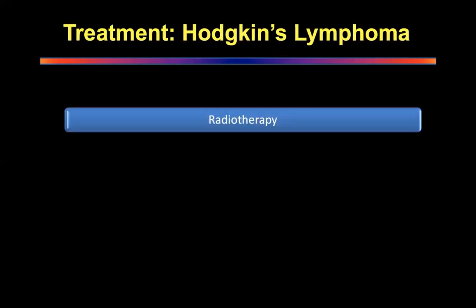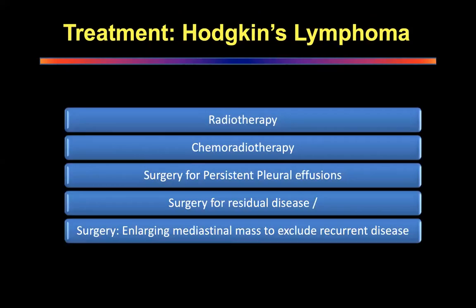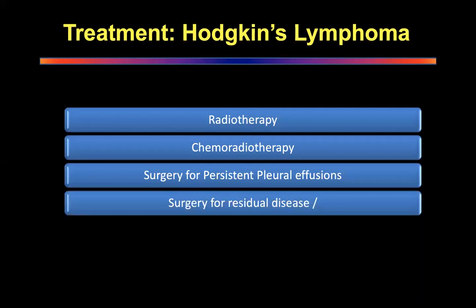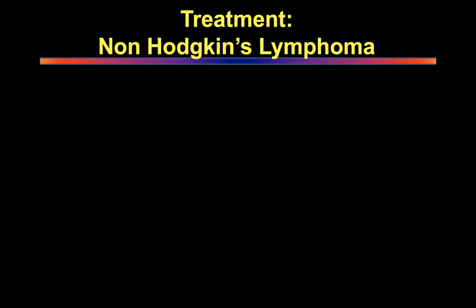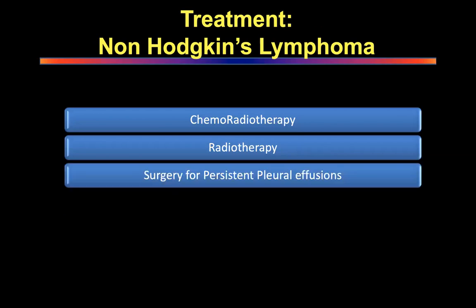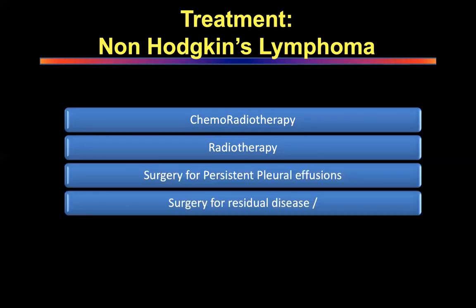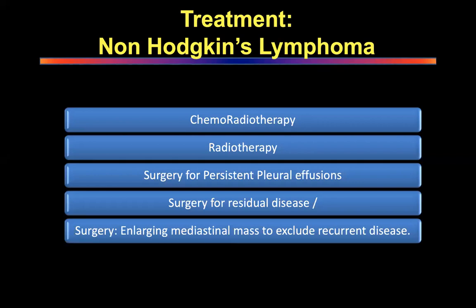Treatment for Hodgkin's lymphoma: chemoradiotherapy — BEP regimen. Surgery is only indicated for persistent pleural effusions, residual disease, or enlarging masses to exclude recurrent disease. For non-Hodgkin's lymphoma, chemoradiotherapy is the primary line of treatment. Surgery indications are the same: persistent pleural effusions, residual disease, and enlarging mass. Surgery in non-Hodgkin's is primarily for biopsy.